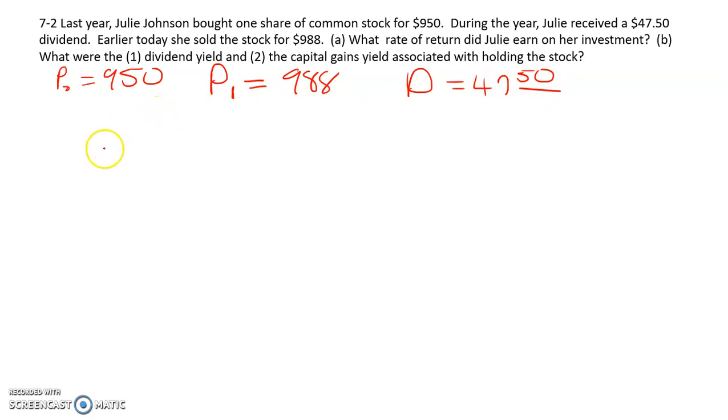So our formula for holding period yield or rate of return, we'll use ROR, is simply P1 minus P0 plus D divided by P0. So the ending price minus the beginning price, add the dividend. This is exactly the same as what we did in chapter six for bonds.